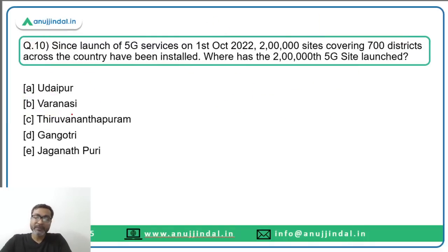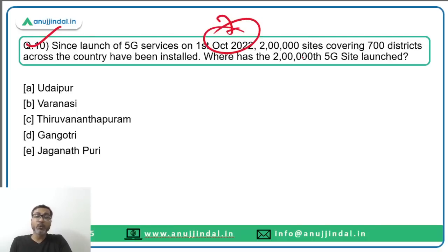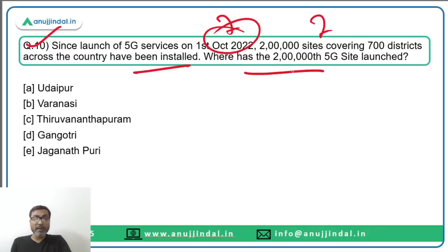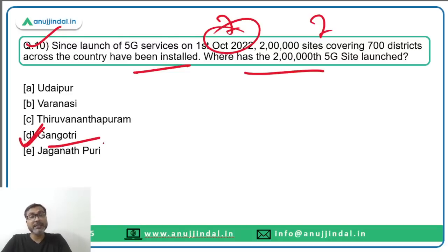Question number ten: Since the launch of 5G services on 1st October 2022, two lakh 5G sites covering 700 districts across the country have been installed. The two lakh 5G site was recently launched in Gangotri. Option D is the correct answer.